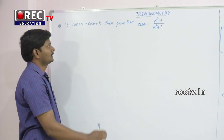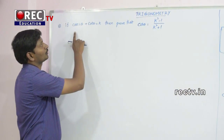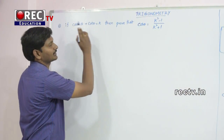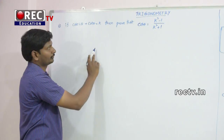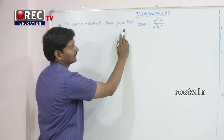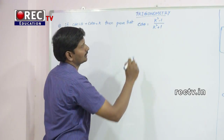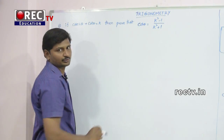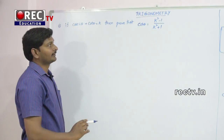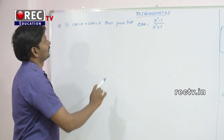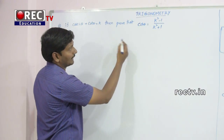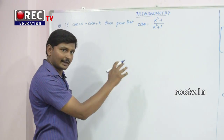First question: if cosecθ + cotθ = k, then prove that cosθ = (k² - 1) / (k² + 1). We can prove this from LHS and RHS.